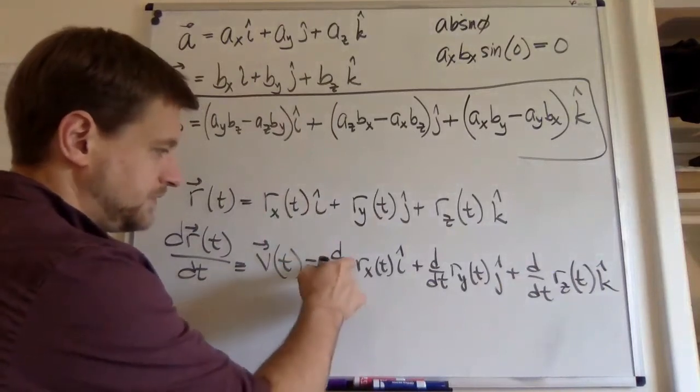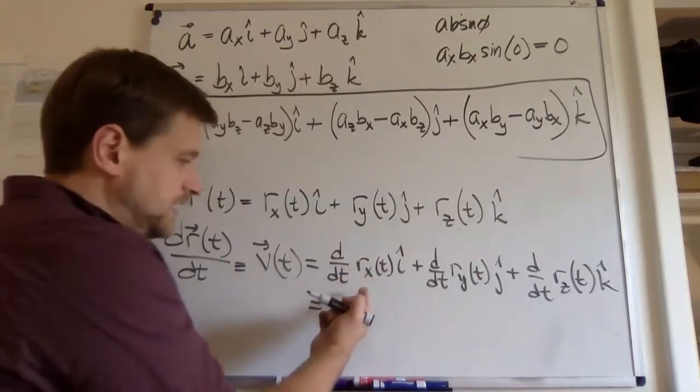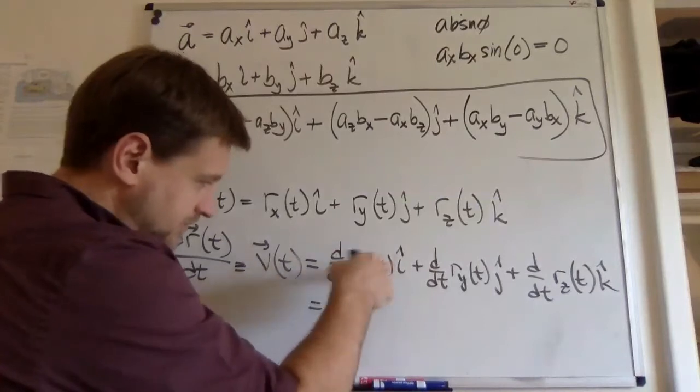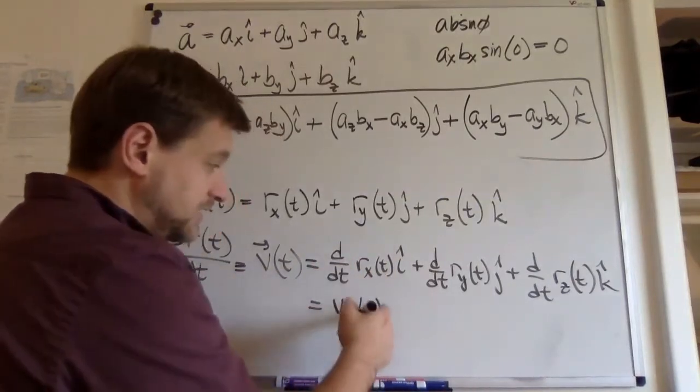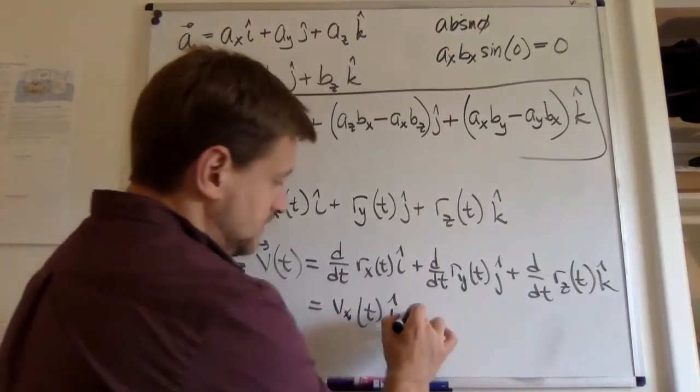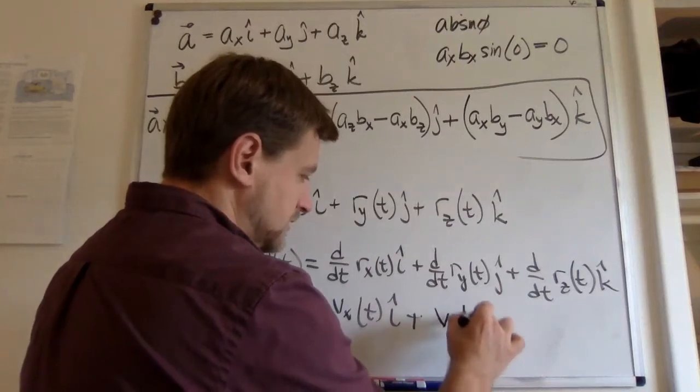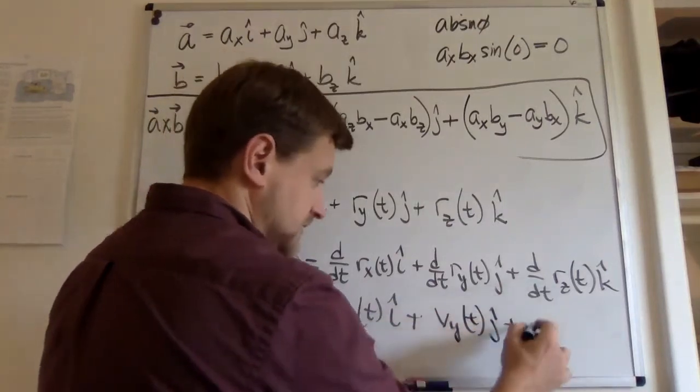D by dt of r sub x of t. Well, that's how we actually define it. We didn't call it r sub x, we just called it x, but that's the horizontal component, the x component of the velocity in the i direction. That's in the y. And this is in the z.